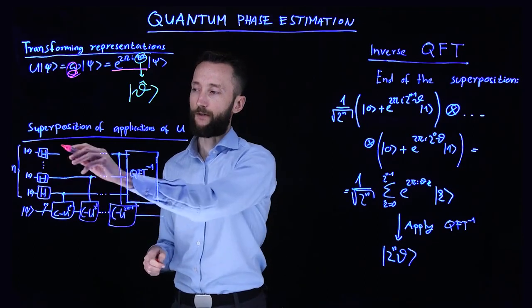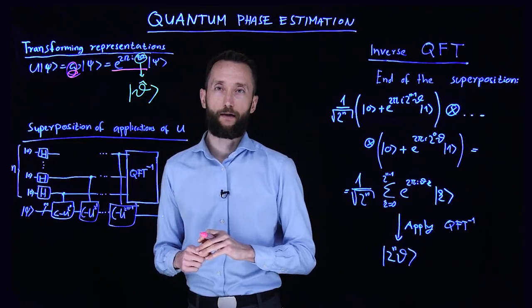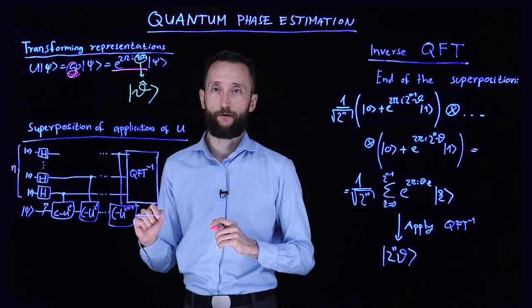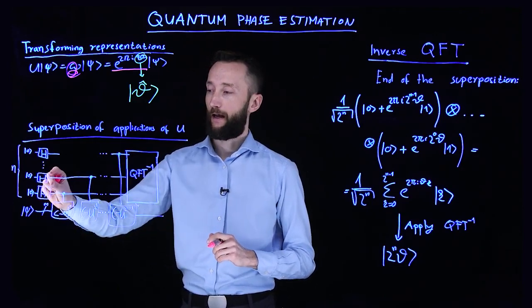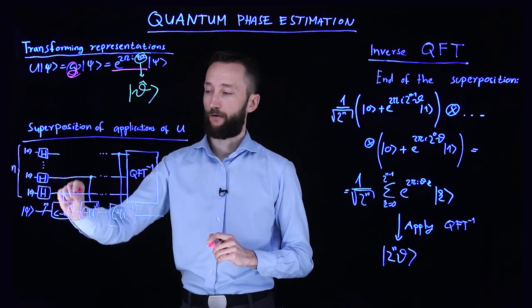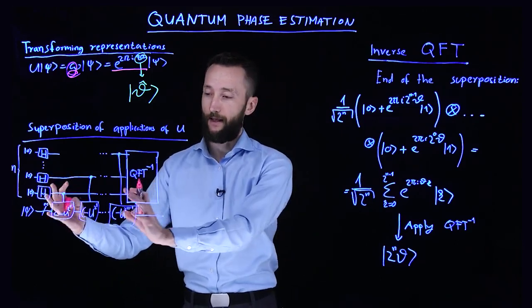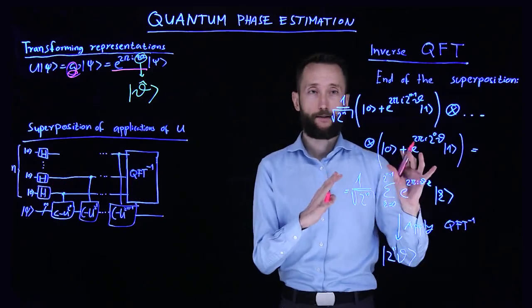We create an equal superposition in the ancillary register where the eigenvalue will be written. Each of these controlled unitaries is applied in superposition. At the end of this procedure, we obtain a specific quantum state.